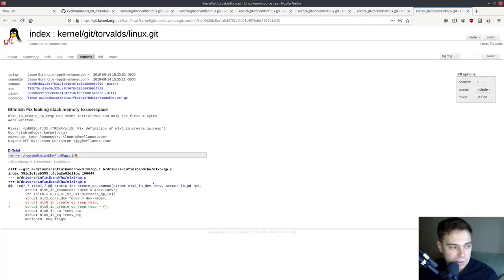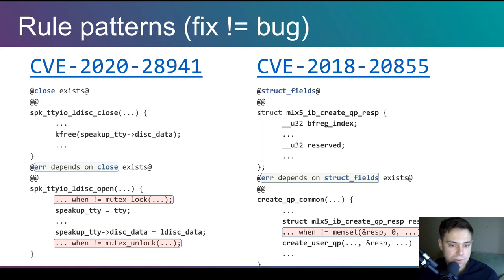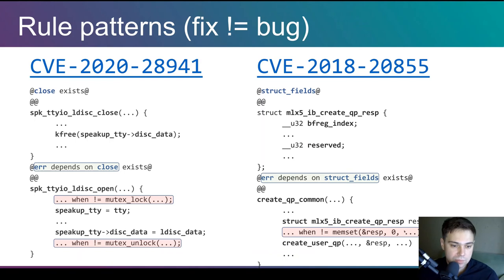Here is another case: a simple patch that initializes a local variable. But to describe it, I first need to check that there is a structure with a reserved field inside it — because highly likely there is no information leak if there is no reserved field in the data structure definition. So we check for the field, for the copy_to_user call, and for the absence of initialization. These abstractions are enough to describe most CVEs in practice.